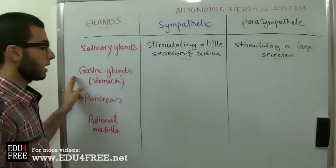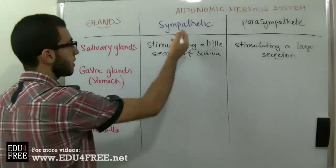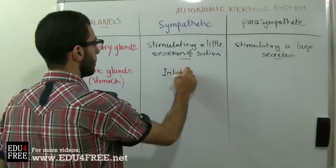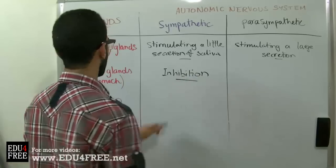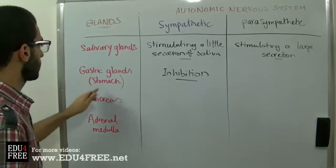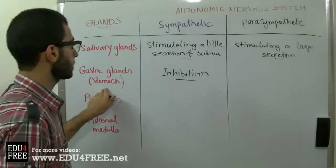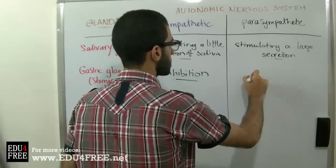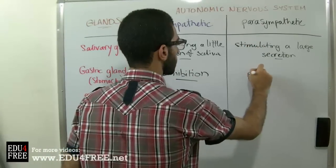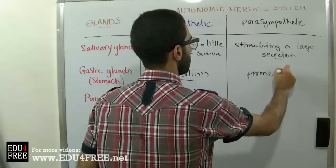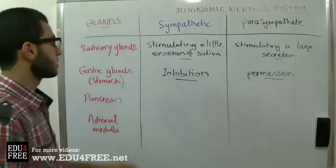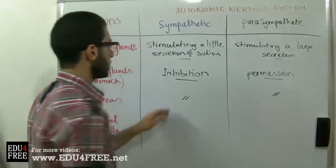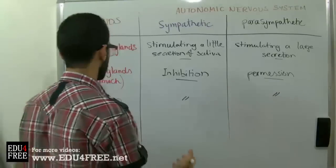Regarding the Stomach, the Sympathetic Nervous System inhibits the secretions of the glands in the Alimentary Canal and Stomach, while the Parasympathetic Nervous System permits the secretion of enzymes. The effect on the Pancreas is the same — inhibition of secretions by the Sympathetic Nervous System, and permission of secreting enzymes by the Parasympathetic Nervous System.